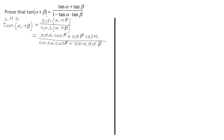Looking at our right-hand side, the numerator has a plus and the denominator has a minus, which matches. Now we need to modify the expression to get it in terms of tan α and tan β, so we divide each term in both numerator and denominator by cos α · cos β.